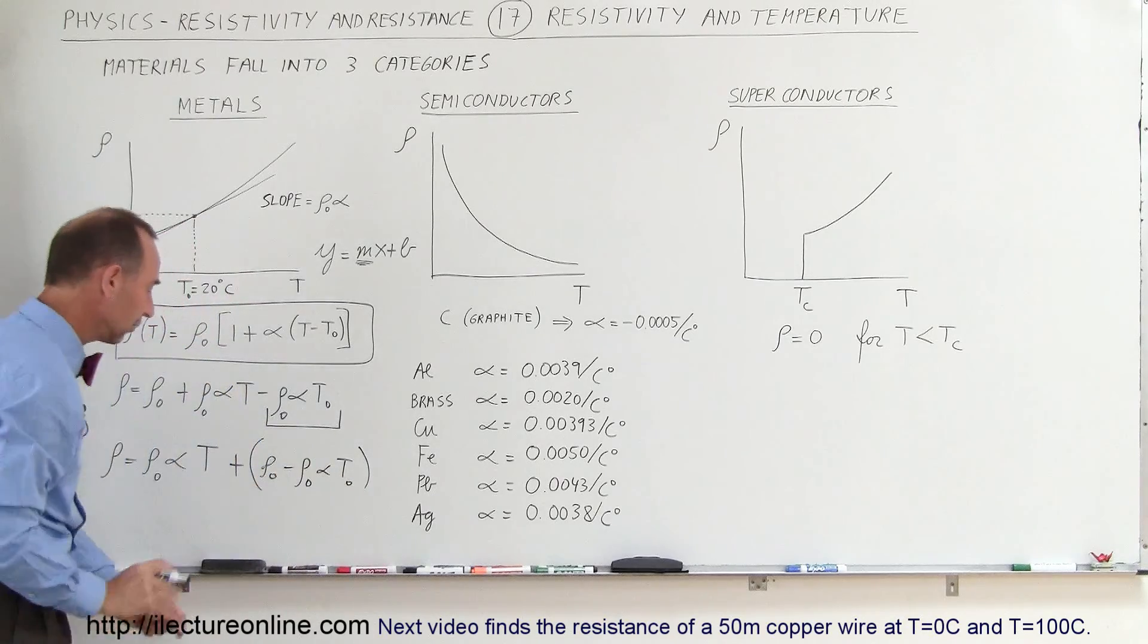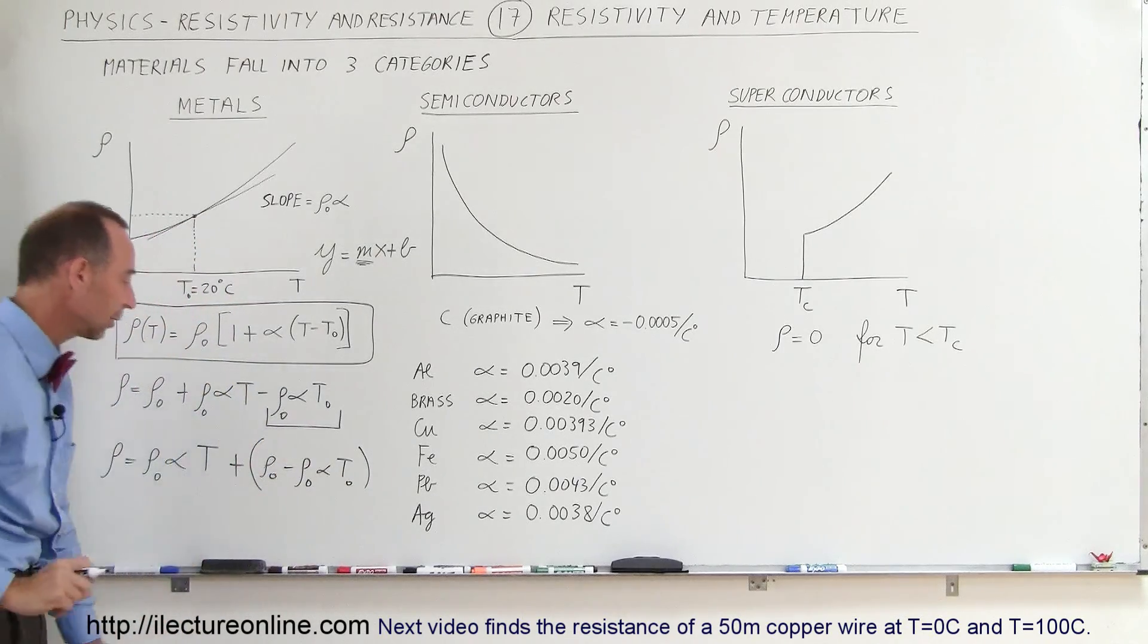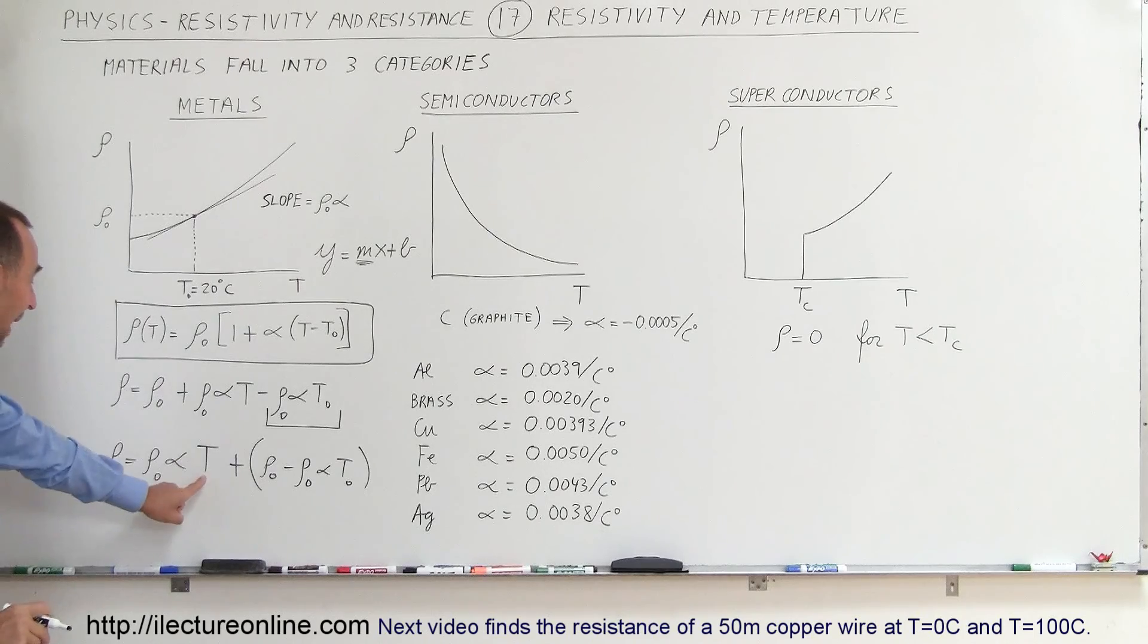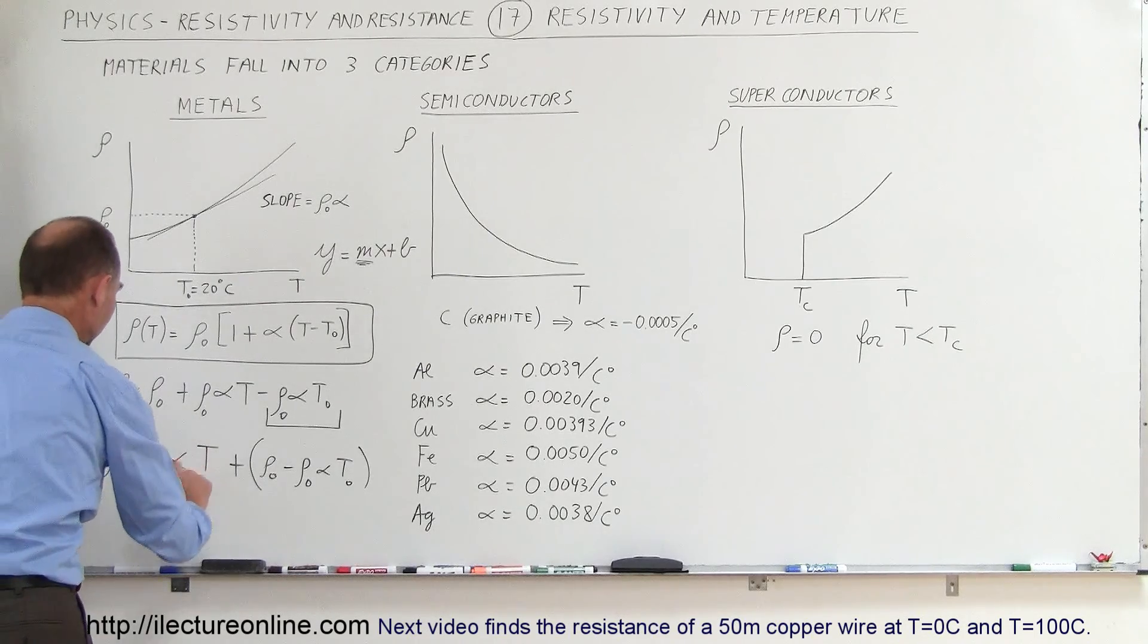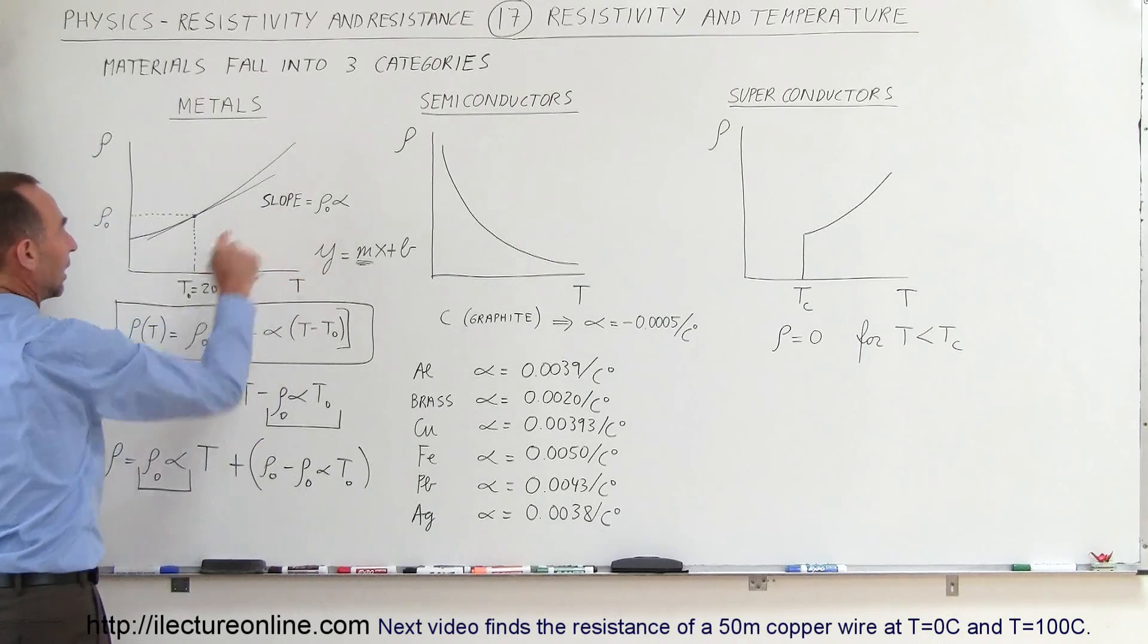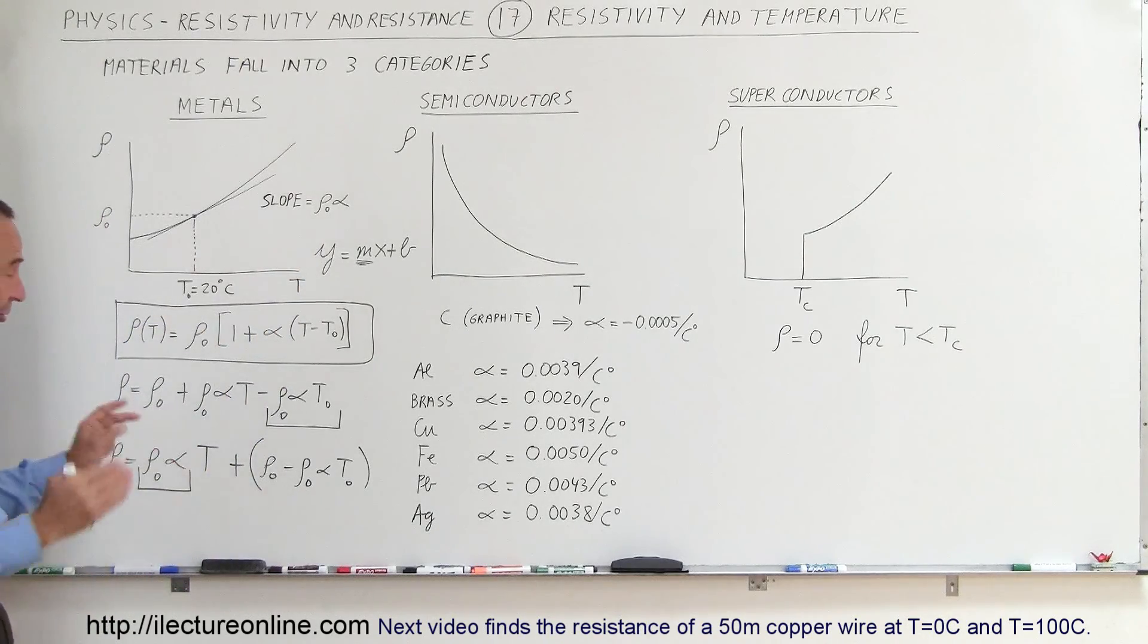This whole thing here is a constant. There's your X and the coefficient in front of the X. So this represents the slope of the straight line, which is what I indicated here.